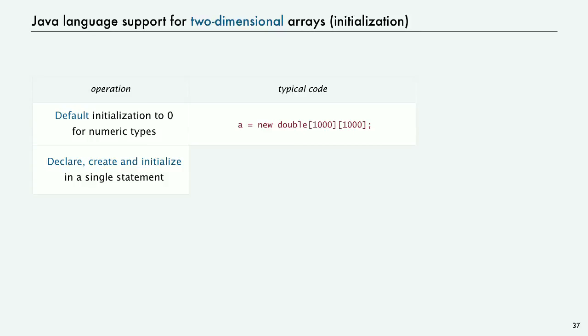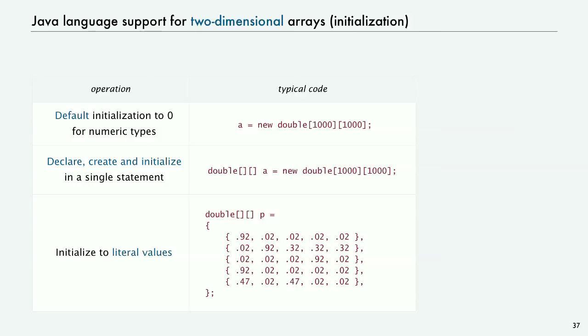And we can declare, create, initialize in a single statement in a similar way. And we can also do literal values. So it's an array of arrays, so we put curly brackets, and then we just put the rows within curly brackets, separated by commas. Again, to initialize to 0, you don't have to have nested loops, like you might expect, and which you do need in many other languages. But you have to really be sure you take into account that the cost of creating an array is proportional to its size.